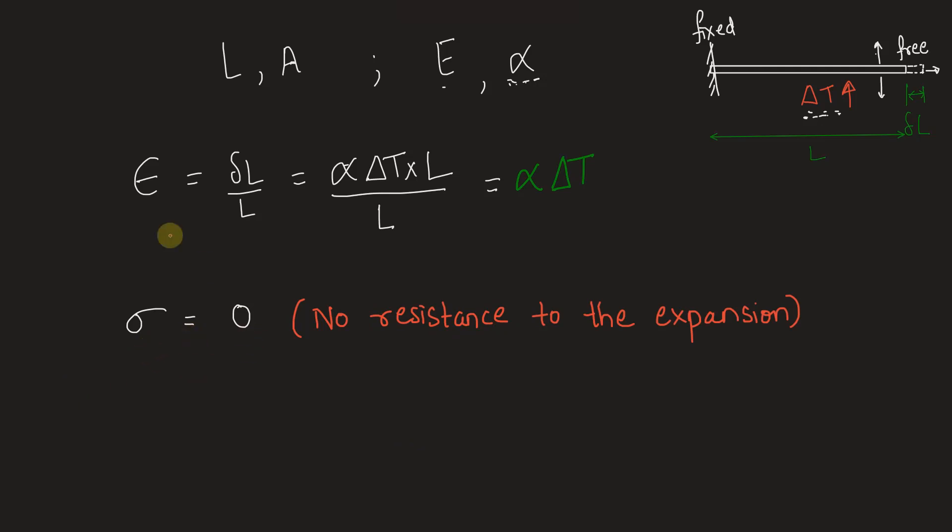Although we know that stress is equal to strain into modulus of elasticity by linearized Hooke's law, but in this case stress is zero. We have to pay attention on the resistance offered by the rod to the effect of this increase of temperature. Let's go back and mark the correct option. So we see that stress developed in the rod is zero and strain developed is alpha times delta T, which is option C. Option C is correct.